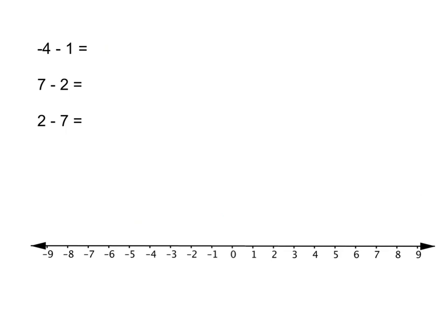Okay, let's see how we did. The first one, we start at negative 4, and we have to take one step backwards because we are subtracting one, so we'll end up at negative 5.